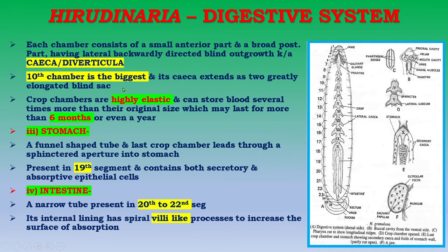There are 10 total crop chambers. The 10th chamber is the biggest one and its caeca extend as two greatly elongated sacs. The crop chambers are highly elastic and can store blood several times more than their original size, which may last for more than six months or even a year. The last crop chamber leads through a sphincter aperture into the stomach, which is present in the 19th segment and contains both secretory and absorptive epithelial cells.